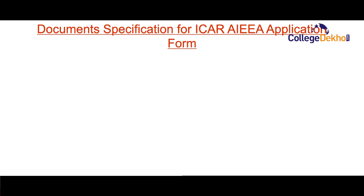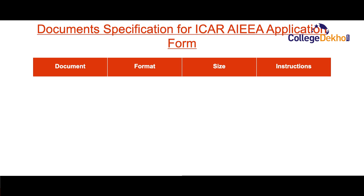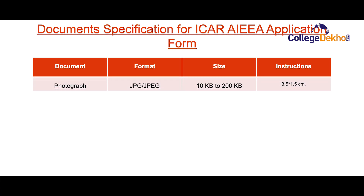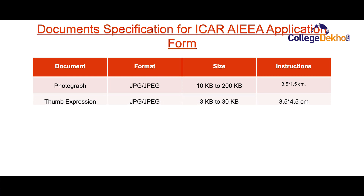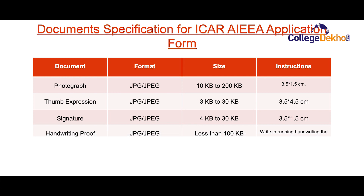Let us look at the specifications prescribed for documents to upload. The photograph should be in JPG or JPEG format, sized between 10 to 200 KB, with dimensions of 3.5 x 1.5 centimeters, and must be scanned. The thumb impression should be in JPG or JPEG format, sized between 3 to 30 KB, with dimensions of 3.5 x 4.5 centimeters.